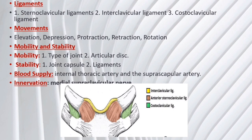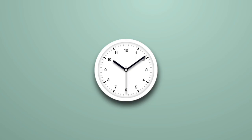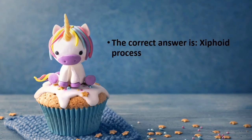Quiz: Among the listed structures, which one does not contribute to the articulating surface of the sternoclavicular joint? Manubrium, medial end of clavicle, first costal cartilage, or xiphoid process? The correct answer is xiphoid process.